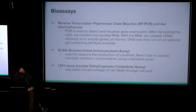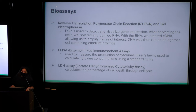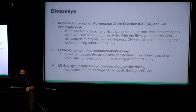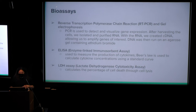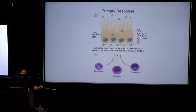We did reverse transcription polymerase chain reaction (RT-PCR) and gel electrophoresis. PCR is used to detect and visualize gene expression. After harvesting our cells, we isolated and purified our RNA, made complementary DNA (cDNA), amplified our genes of interest, then ran the DNA on an agarose gel containing ethidium bromide. We also did ELISA — enzyme-linked immunosorbent assay — to measure cytokine production, and an LDH (lactate dehydrogenase) cytotoxicity assay to calculate the percentage of cell death.